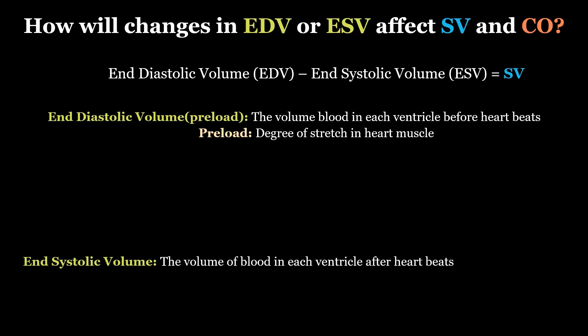End-diastolic volume and preload are often used interchangeably in textbooks. Technically, the definition of preload is the degree of stretch in your heart muscle, whereas end-diastolic volume is the volume of blood. But the volume of blood is so closely tied to the degree of stretch in the heart muscle — because the more volume, the more stretch — that they just use them interchangeably.